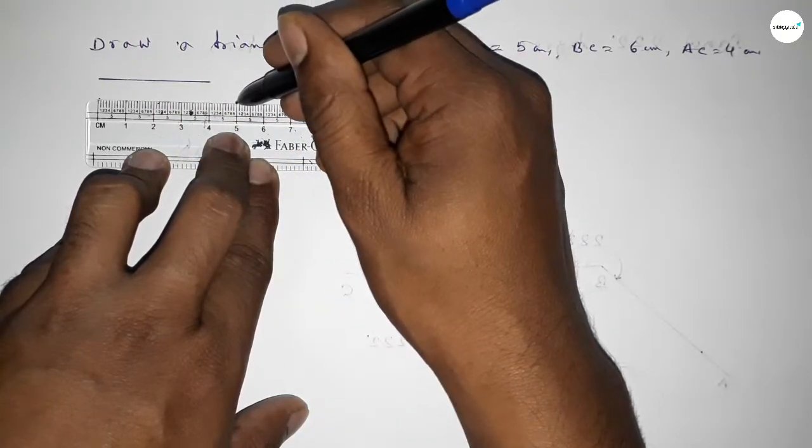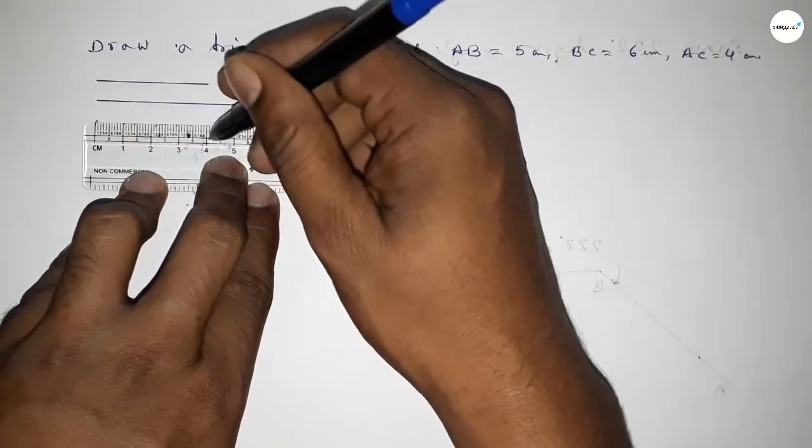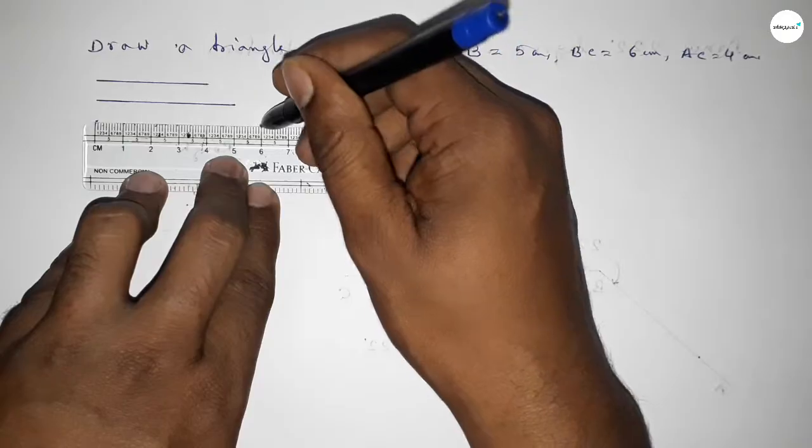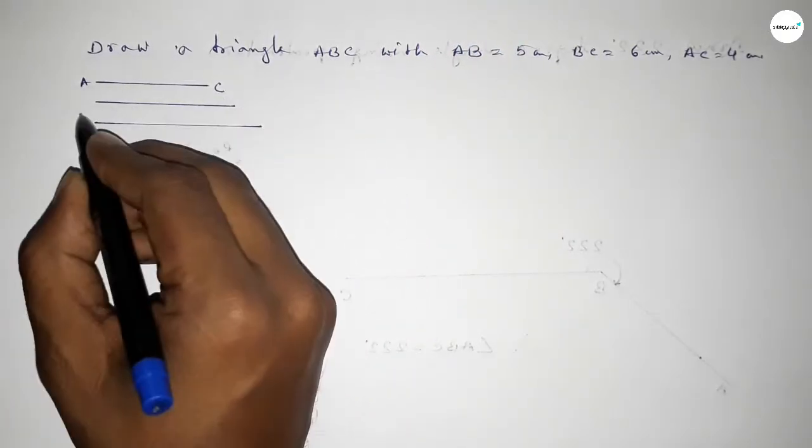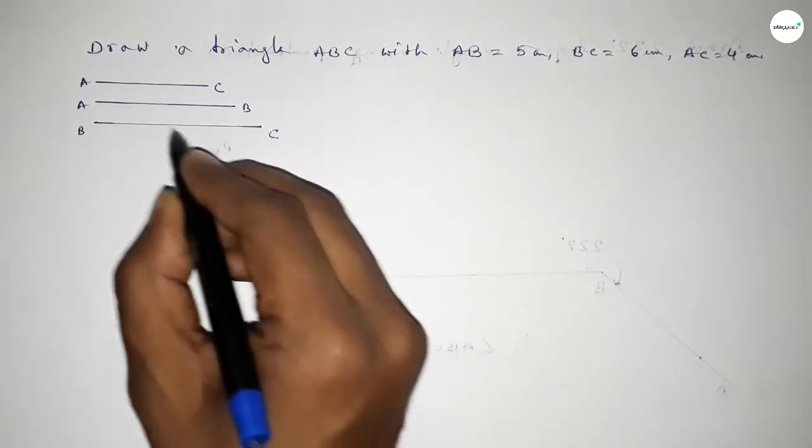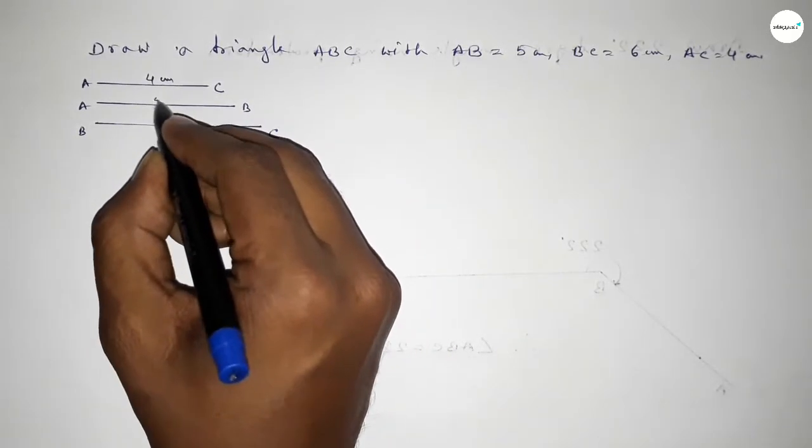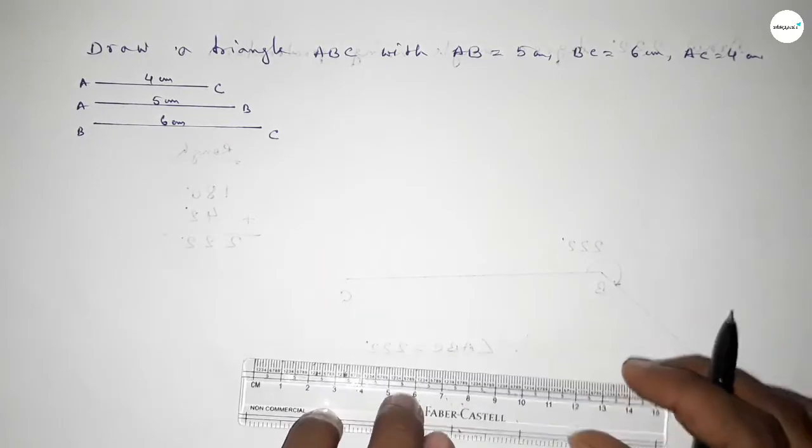And last one 6 centimeter, so this is 6. So this one AC line and this one AB and last BC, and this is 4 centimeter, 5 centimeter and 6 centimeter.